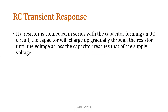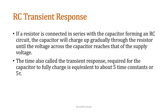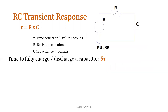This will only discuss the time required for the capacitor to fully charge or discharge. So if we have a series RC circuit, the time needed to fully charge or discharge the capacitor is equivalent to 5 time constants, or 5 tau. That time constant is equal to the resistance multiplied by the capacitance. Resistance is in ohms, capacitance is in farads, and the time constant is in seconds. So the time to fully charge or discharge the capacitor is equal to 5 times tau.